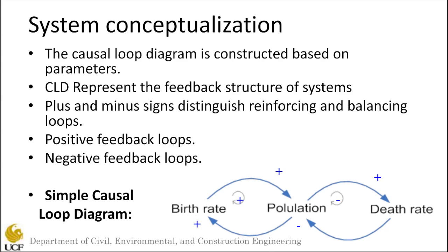On the other hand, when the population increases, the death rate will increase. When the death rate increases, the population decreases. So the population increases the death rate, but the death rate decreases the population — this is a balancing loop, which means in time this loop will find a balance. As the number of loops increases, it is impossible to calculate the impacts of all these loops without utilizing an approach like system dynamics.